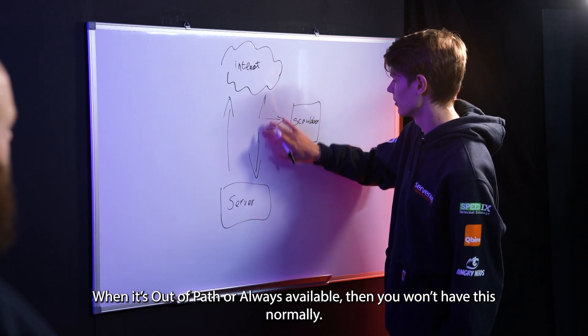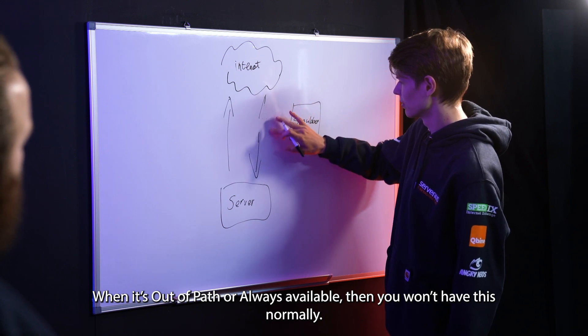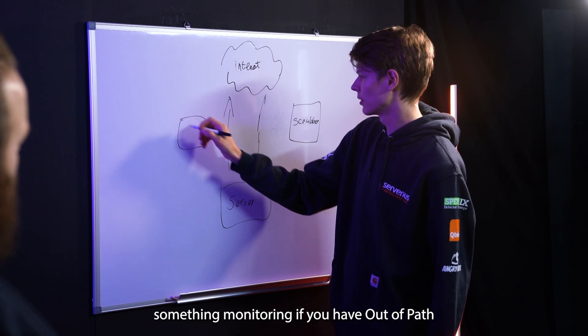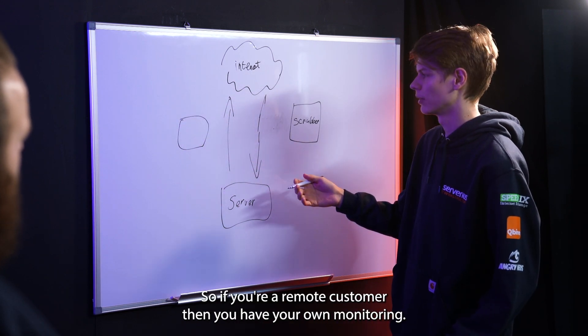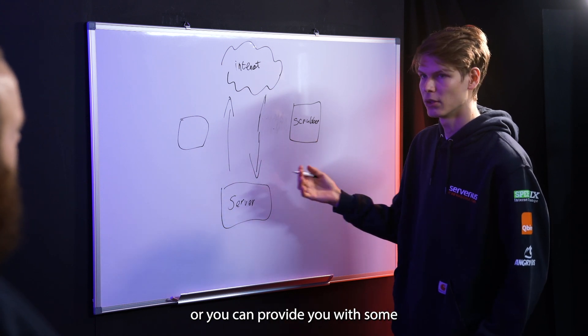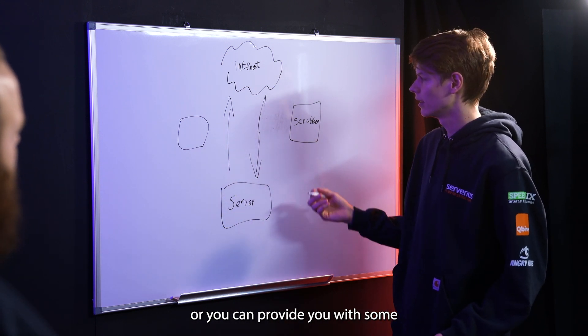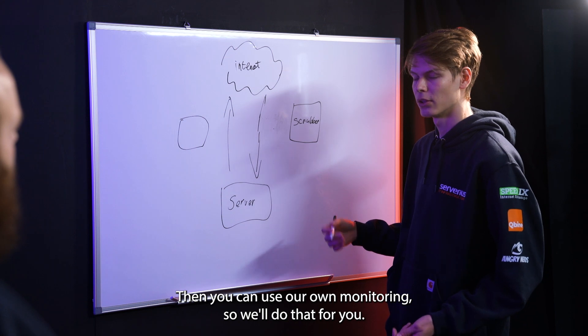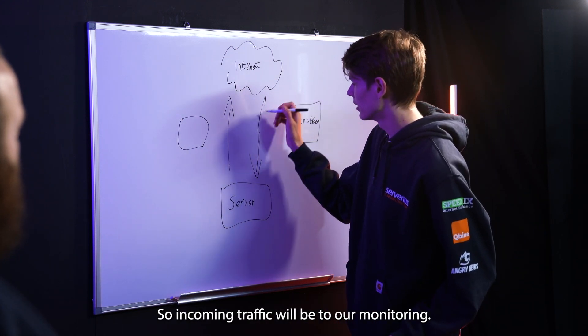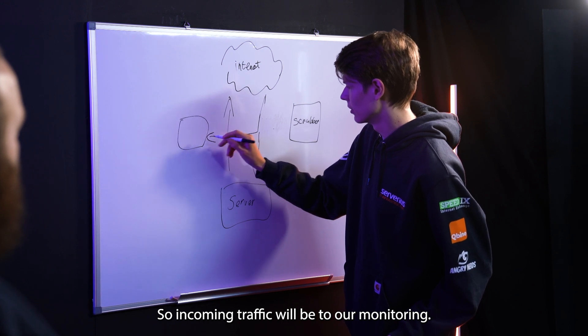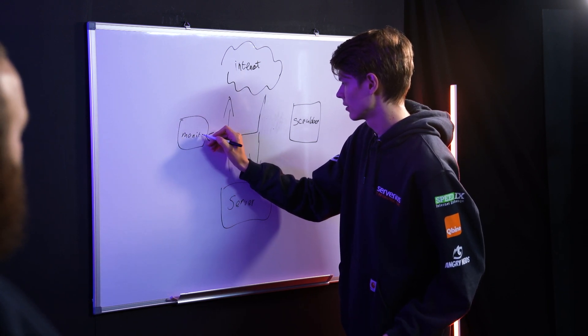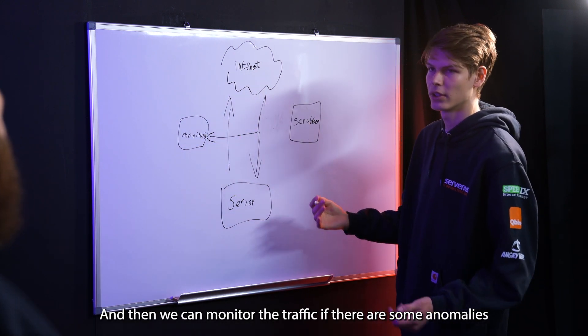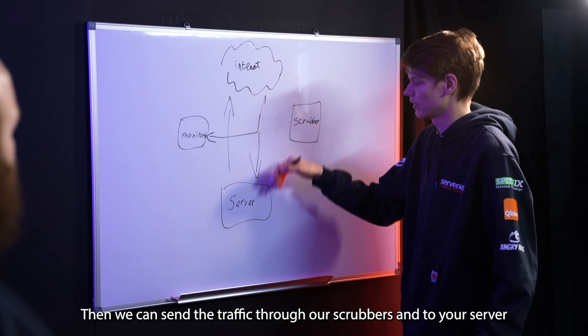When it's Out of Path or Always Available, you won't have this normally. It will just go straight to your server, and then we will have something monitoring. If you have Out of Path, so if you're a remote customer, then you have your own monitoring, or we can provide you with some. Incoming traffic will be sent to our monitoring.